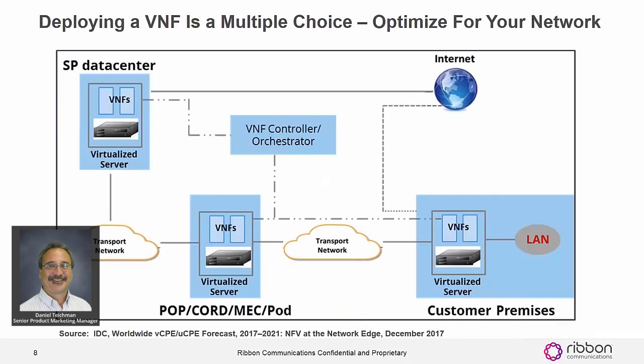One last slide on VNFs and what the market looks like is a deployment model. Where do you put these VNFs — software running on a server? Starting on the far left, you can put that software in a service provider's centralized data center, or in a data center at the edge of your network if you have more than one. You can also deploy virtual network functions on servers running on customer premises, which is getting a lot of attention — what functions run best at the customer premise, and which ones should run at the edge.